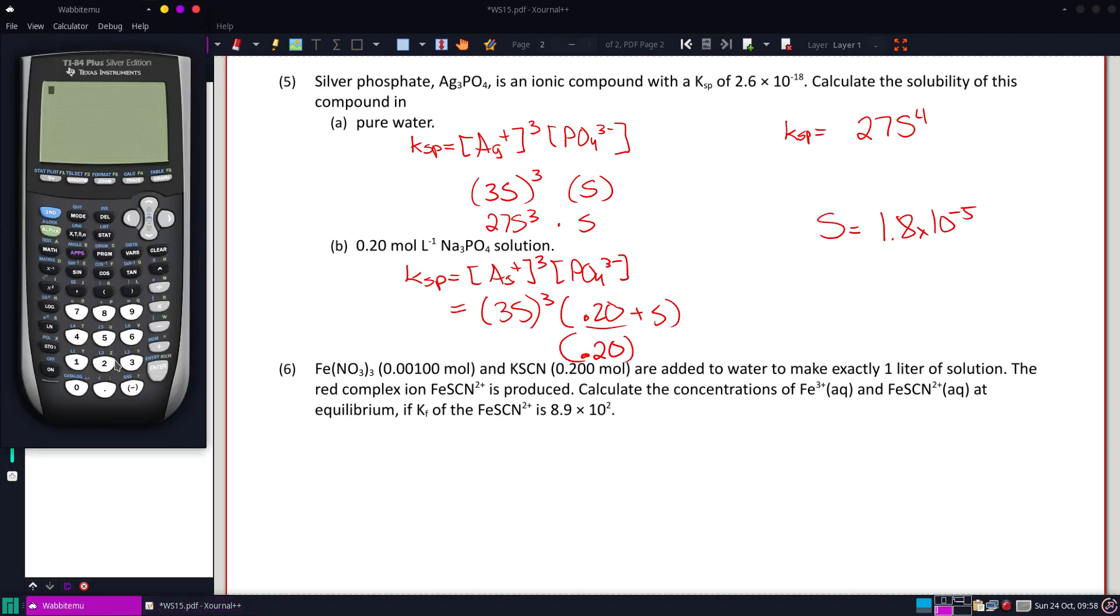Let's see what we get there. So I'll have that same Ksp of 2.6 times 10 to the negative 18th. And I'm going to divide it by the 27 we get there and that 0.2.